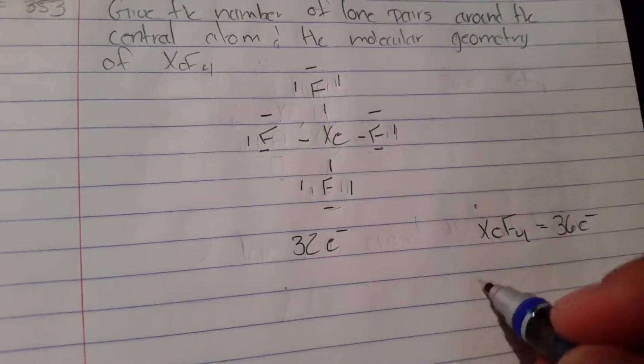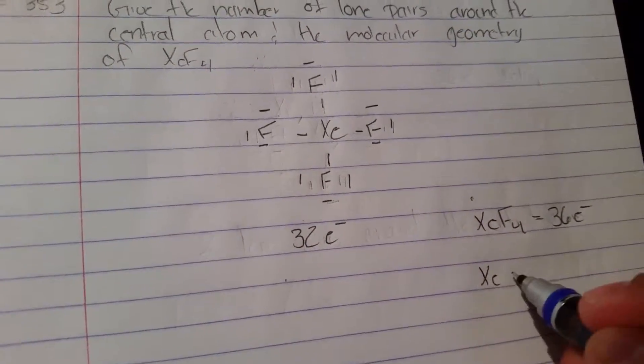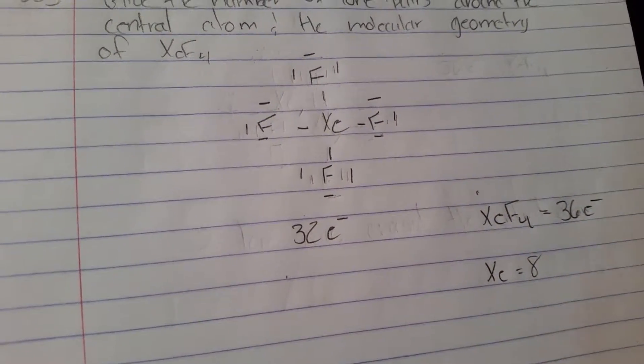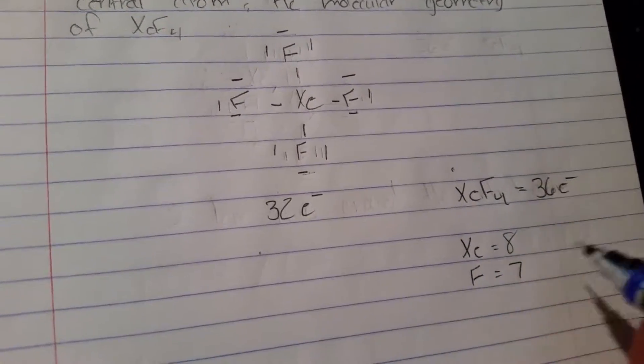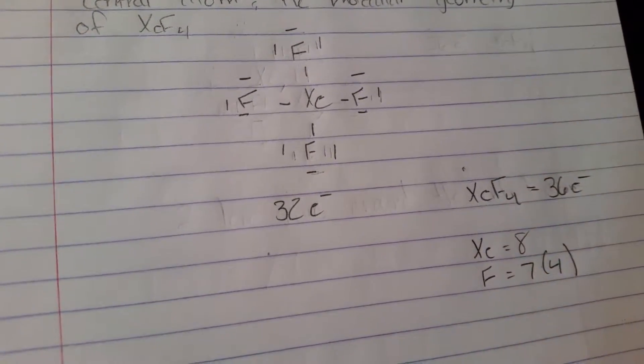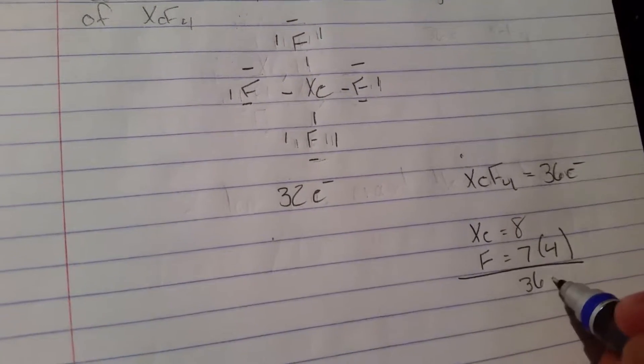And this can be found because xenon equals eight electrons, and then fluoride equals seven. But we have four of them. And when you add that up, you get 36 electrons.